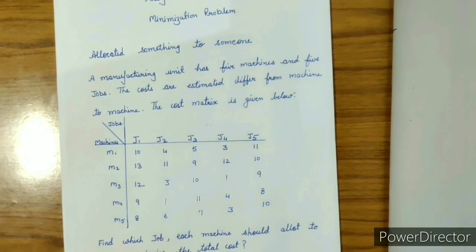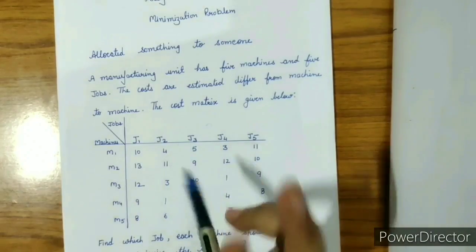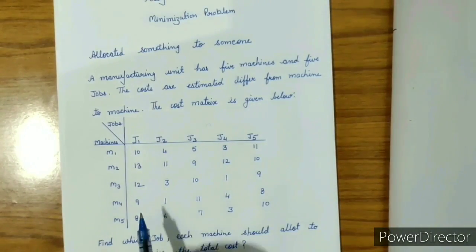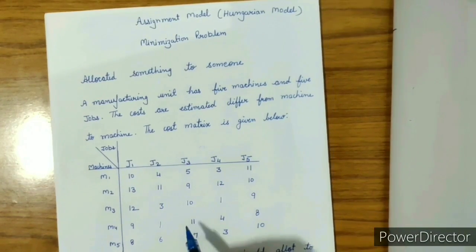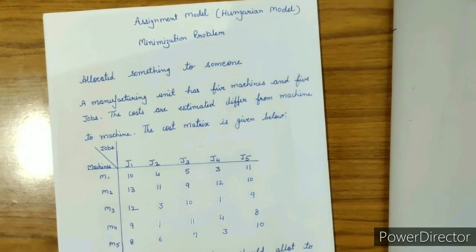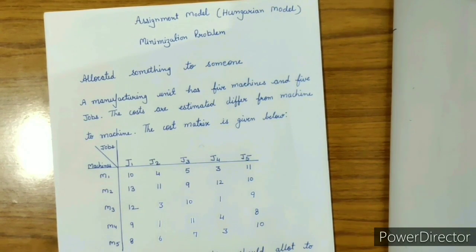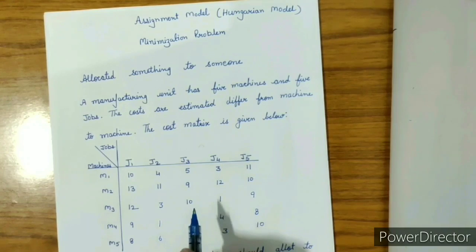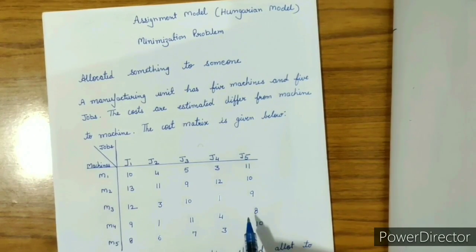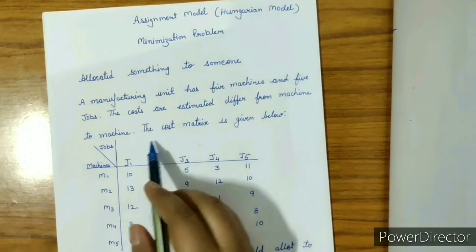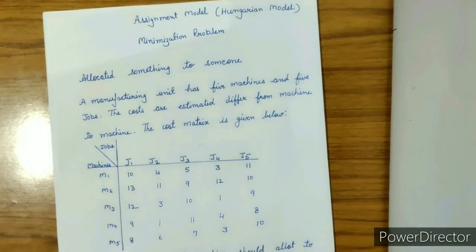For the solution, before starting, we have to check two major concepts. First, we check the nature of the given problem — whether it belongs to maximization or minimization. In a maximization problem, elements of the matrix show profit, sales, return, revenue, etc. But in a minimization problem, the elements relate to cost, hours, machine hours, labor hours, etc. Here we have a cost matrix, so it is a minimization problem.